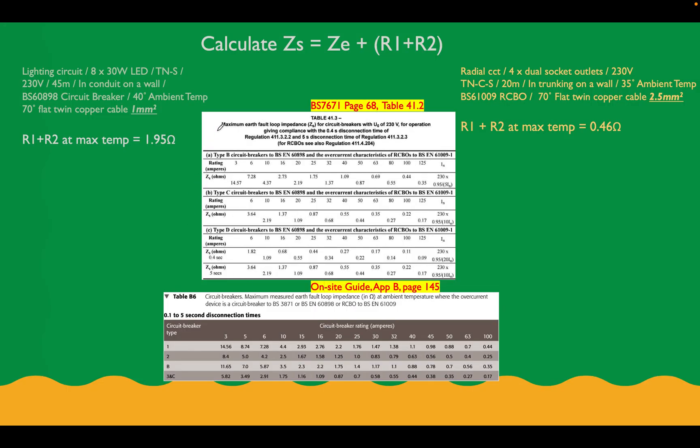Okay, so look at the top of our formula we can see. We know this already. ZS is equal to ZE, which is the external resistance, plus the R1, R2 value, which we've calculated here. So our earth fault loop impedance value is going to be equal to our ZE, so the earth fault loop impedance for the external part of the circuit, plus the part of our circuit which we've installed.